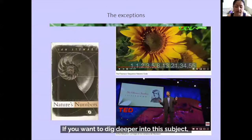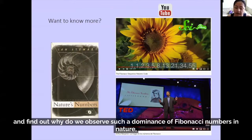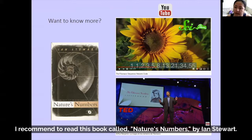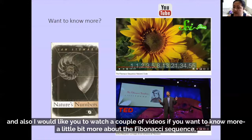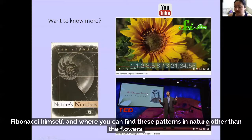If you want to dig deeper into this subject and find out why we observe such a dominance of Fibonacci numbers in nature, I recommend reading the book called Nature's Numbers by Ian Stewart. He explains a little bit of why this is seen in nature. I would also like you to watch a couple of videos if you want to know more about the Fibonacci sequence, Fibonacci himself, and where you can find these patterns in nature other than in flowers.